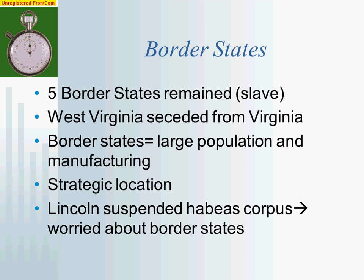Lincoln had to be very careful about every single thing he did for fear that the border states might secede, especially Maryland. Lincoln decided to suspend habeas corpus — our civil law, which literally means 'release the body.' When arrested under a civil government, you have certain rights: a speedy trial, right to confront your accuser, etc. By suspending habeas corpus in Maryland, he suspended all of these constitutional rights. Martial law became the rule in Maryland, meaning whatever the military says goes, and anti-Unionists were arrested and detained during the war.